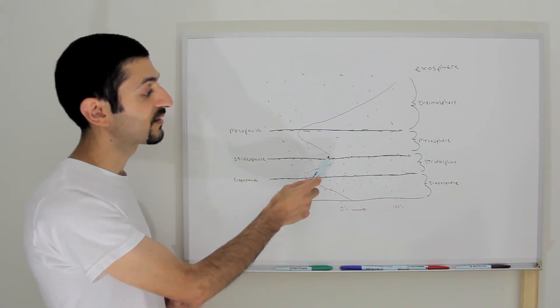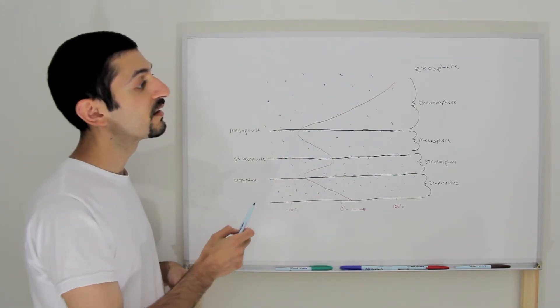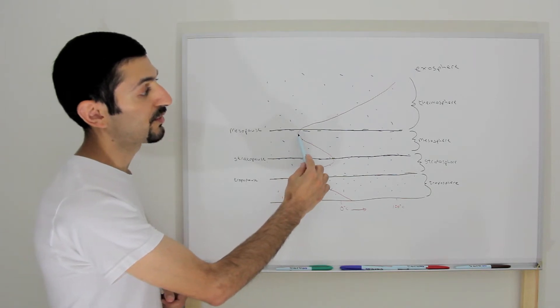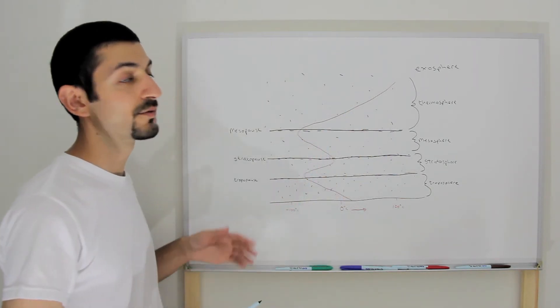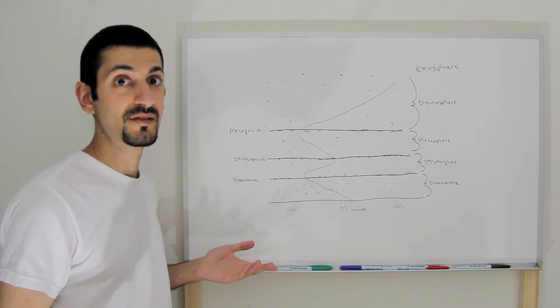And then the area gets so thin that it gets colder again. But then this is the interesting thing. It gets hot, and then it can get up to even like hotter than a thousand degrees Celsius.